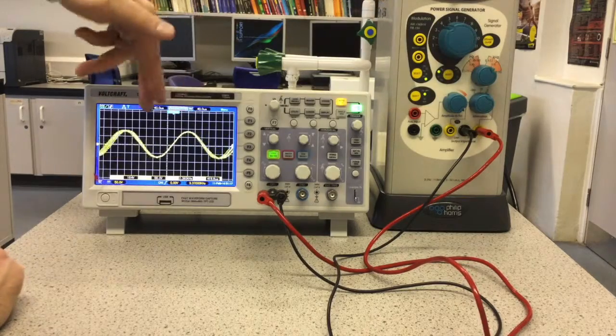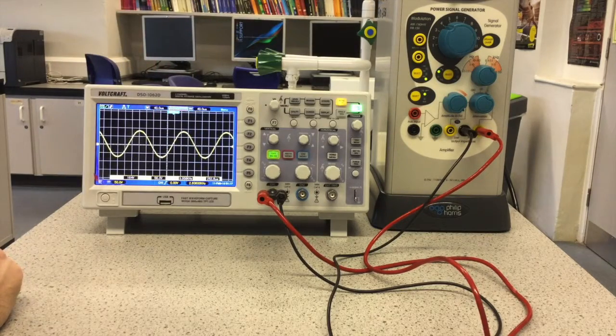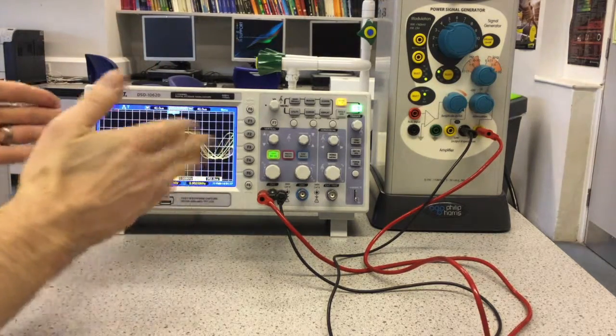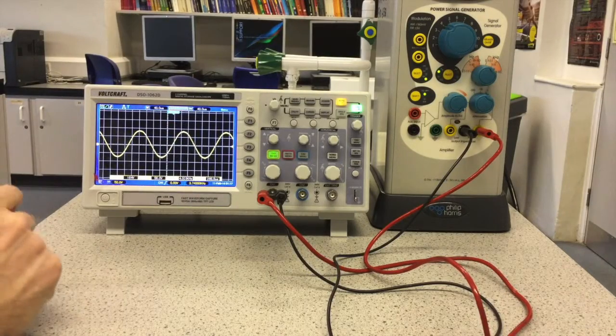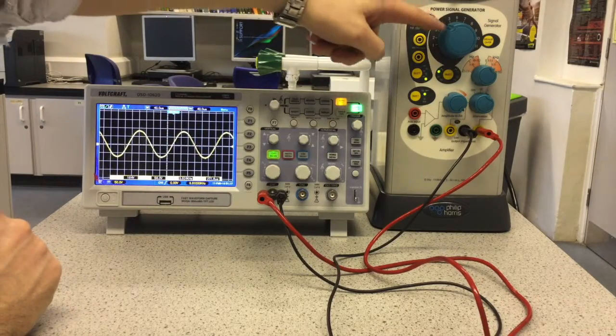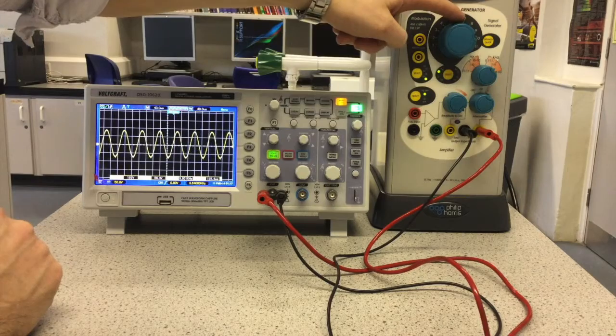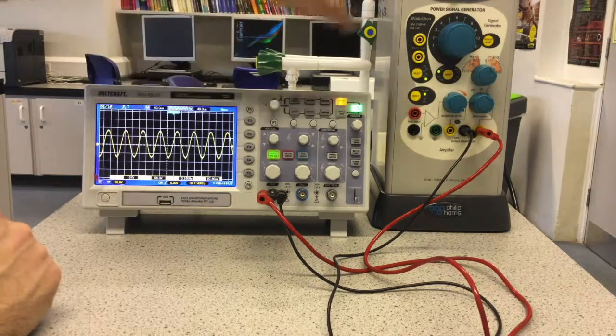So because I'm reducing the frequency, the time period is increasing, so it's spreading out over the screen. And then if I go to a higher frequency, obviously you'll get more compressed on the screen there.